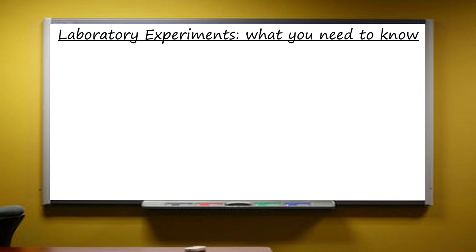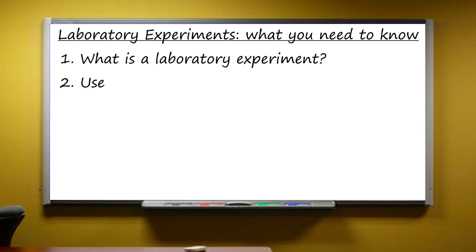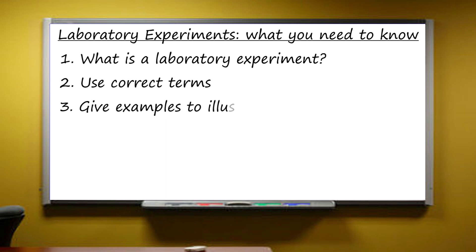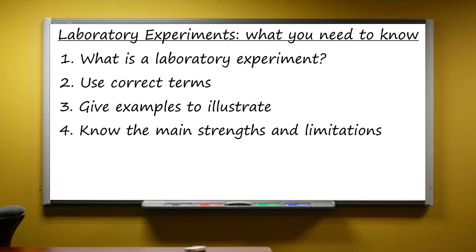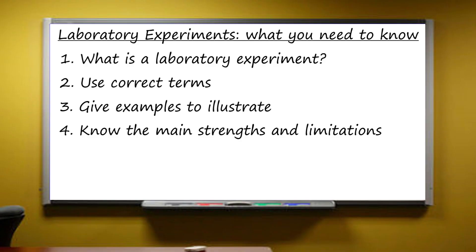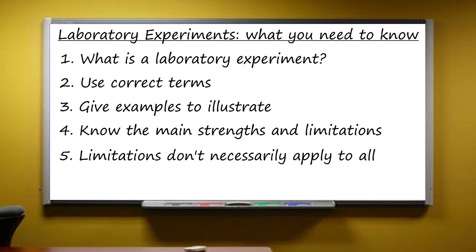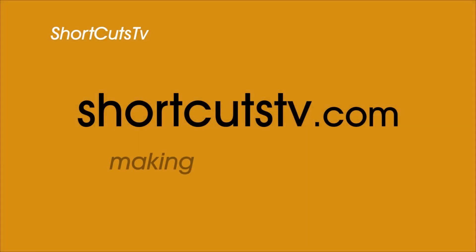So let's summarise. Preparing for questions on laboratory experiments: first, know what the experimental method is, talk the talk, and use the correct terms. Illustrate your answers with real experiments, and know the main strengths and limitations of laboratory experiments. Do this well and you'll do fine. But to go from a B to an A grade, you'll also need to go that bit further and show you know that the limitations don't apply in the same way to all experimental studies. And if you found this Shortcuts to Psychological Revision helpful and would like to see more revision clips on methods and other topics, then go to Shortcutstv.com.